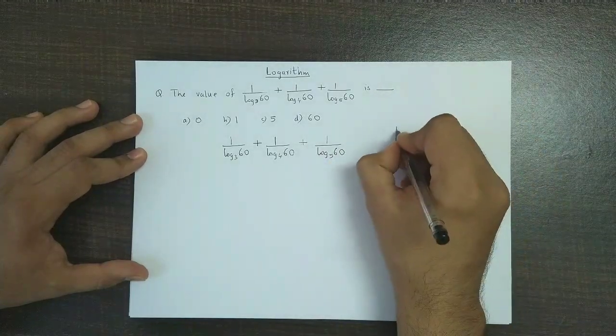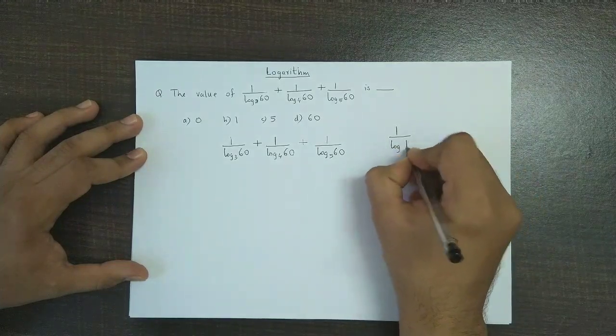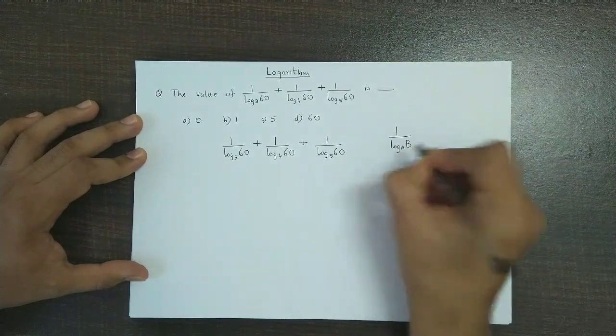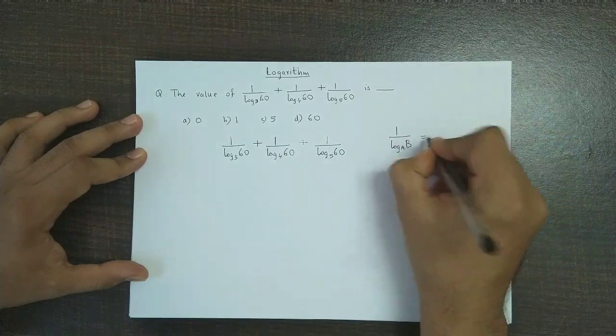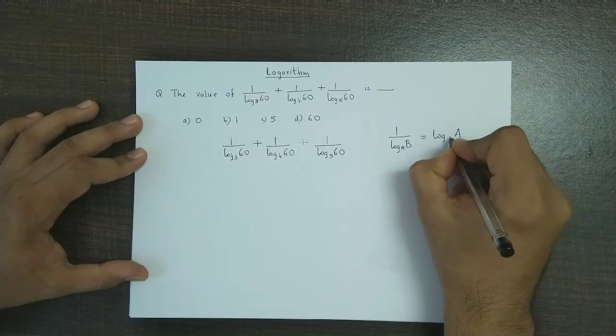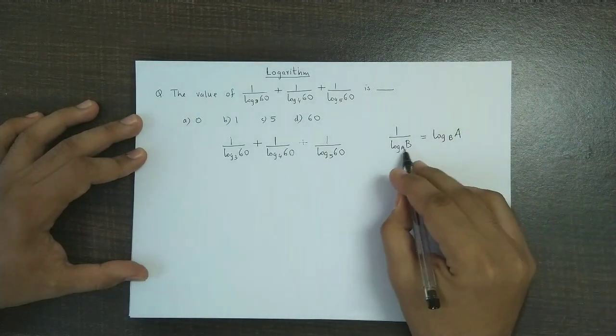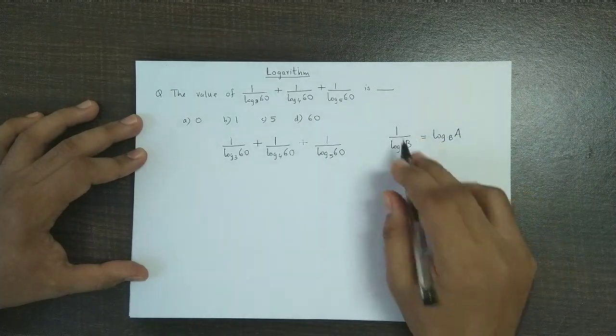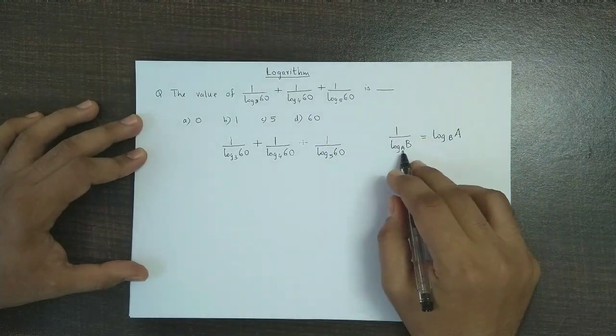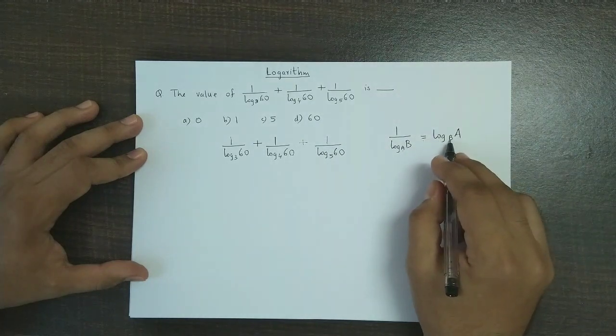Now we know that 1 upon log of B to the base A could be expressed as log of A to the base B. So these two get interchanged when we take the reciprocal. So 1 upon log B to the base A is equal to log of A to the base B.